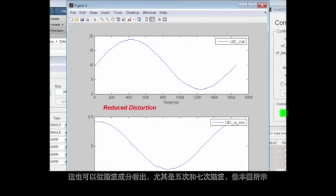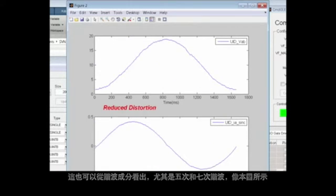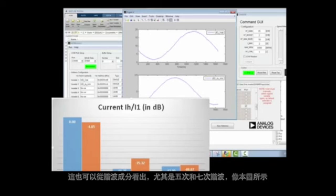This can be also seen in the harmonic content, especially from the 5th and 7th harmonics, as indicated here.